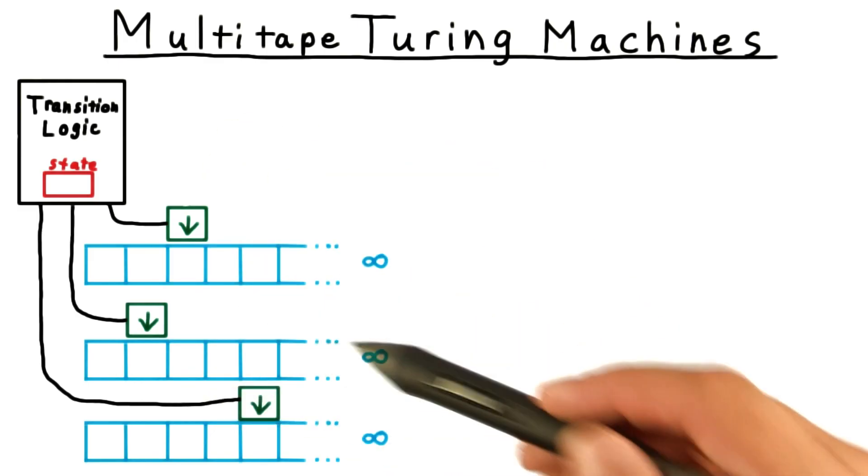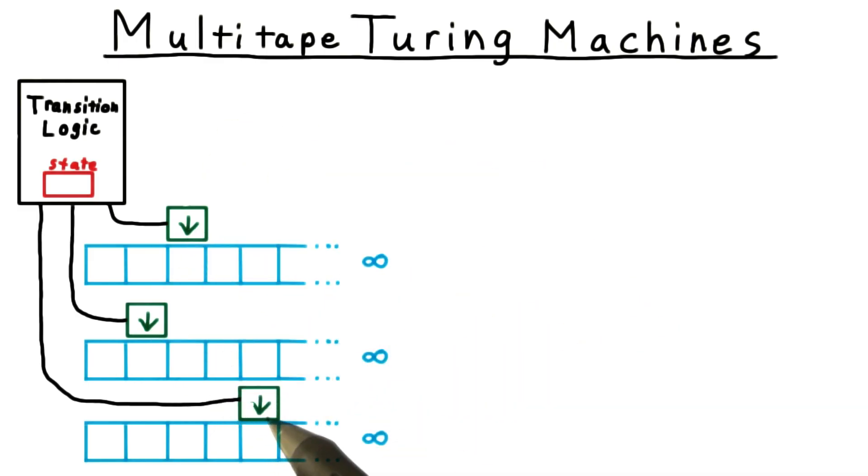As shown in the figure here, each tape has its own head, and what the Turing machine does at each step is determined solely by its current state and the symbols under these heads.